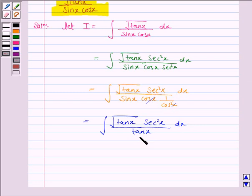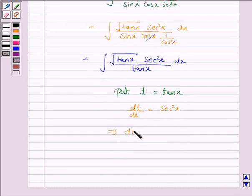Now we substitute t for tan x. So dt by dx is secant square x and this implies dt is equal to secant square x dx.